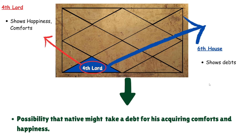The fourth lord shows happiness and comforts, while the sixth house shows debts. There is a possibility of extravagance — you might take on debt to acquire a comfortable and happy life. You need to be very cautious here; if you do take a loan, keep it below your means.